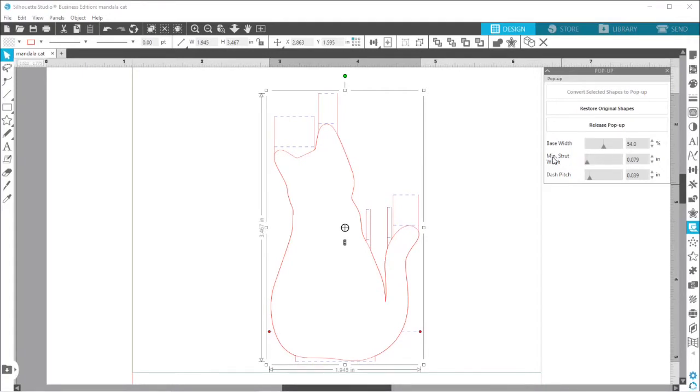And then your minimum strut width. That's how many of these little pieces you have around the cat. And I don't really care for these tiny little ones. Those aren't going to be very stable. So I'm going to go ahead and turn that up as well. And you can see as you turn that up, you'll get thicker, steadier pieces. And I think that'll look good there.